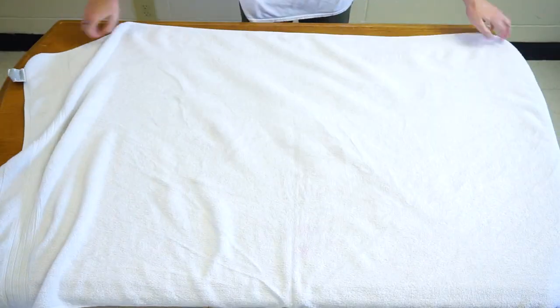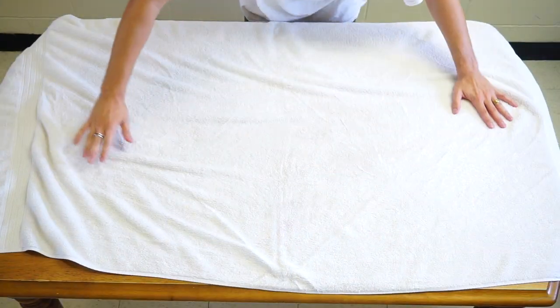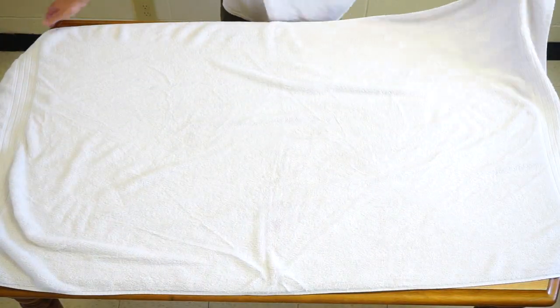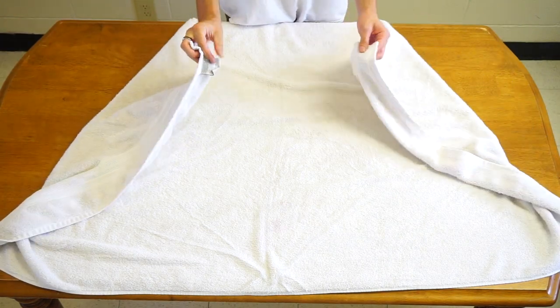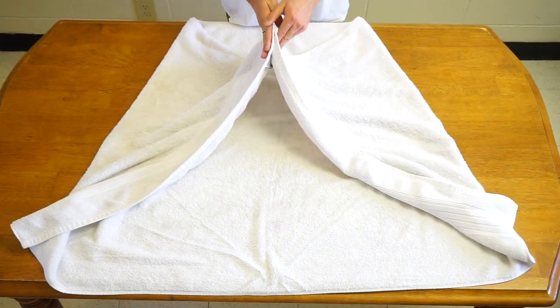Grab your towel and put it on a flat surface. I like to put it with the tag side facing up. Grab your two corners and pull them together. Again, I like to tuck the tag down so that it doesn't show later.